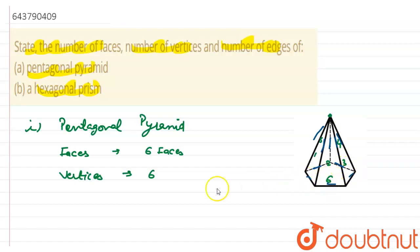So total how many edges are there? They have ten edges. Now let's move to the second part which is about hexagonal prism.